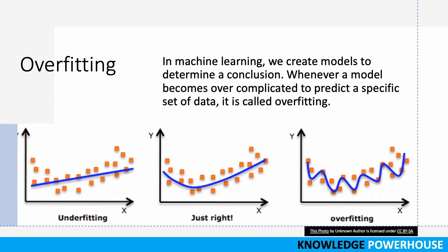In machine learning we can create models to determine a conclusion — models that predict things or classify things. But sometimes these models become over-complicated, and when they become over-complicated they are able to predict a specific set of data but not a generic set of data. For example, in this diagram we have underfitting on the leftmost side, where a straight line passes through different kinds of points; then we have 'just right' in the middle; and then we have overfitting. The overfitting curve is able to go through most of the points, but it is called overfitting because it is becoming too complicated.